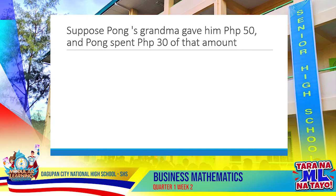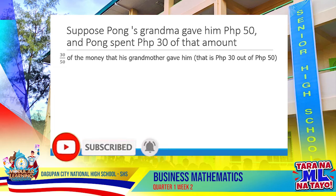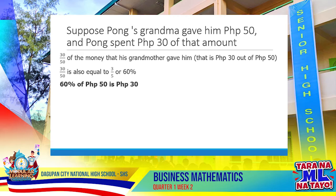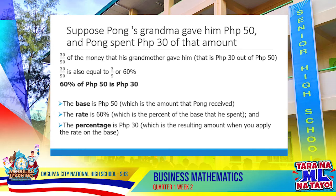Let's have an example. Suppose Pong's grandma gave him 50 pesos and Pong spent 30 pesos of that amount. Based on the given facts, we can say that Pong spent 30 out of 50 of the money his grandmother gave him. The fraction 30 over 50 is also equal to 3 over 5, or 60 percent. So we can make the following statement: 60% of 50 pesos is 30 pesos. The base is 50 pesos, which is the amount Pong received. The rate is 60%, which is the percent of the base that he spent. And the percentage is 30 pesos, which is the resulting amount when you apply the rate on the base.